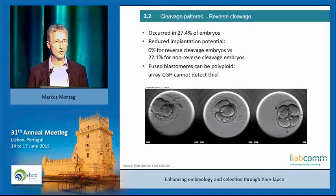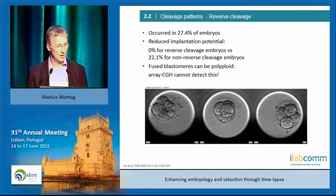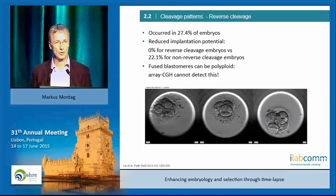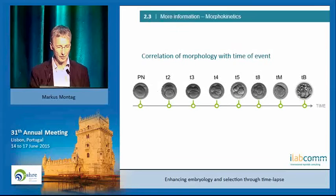There is another type of abnormal cleavage called reverse cleavage. A publication from the beginning of this year clearly showed that embryos exhibiting this have close to zero implantation rate, and it can be quite frequently occurring. What happens is that one of the blastomeres tries to divide and then snaps back, doubling the chromosome content of that blastomere. You won't even detect it by array CGH because it's the whole chromosome content that is duplicated.